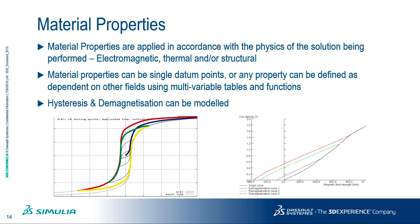When simulating the performance of an electromagnetic device, a critical property to accurately represent is the behaviour of the materials used. Opera material properties define how the material will behave in the current field, temperature and stress. Material data can be defined in the software or imported from elsewhere if you have your own material library. For ultimate accuracy, we allow the use of hysteresis, as in the graph on the bottom left, and demagnetization curves, as in the graph on the bottom right.